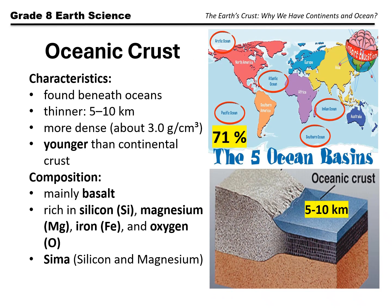The oceanic crust forms the floor of all the world's oceans, including the Pacific, Atlantic, Indian, and Arctic oceans. It covers about 71% of the Earth's surface, making it the most extensive crust type.